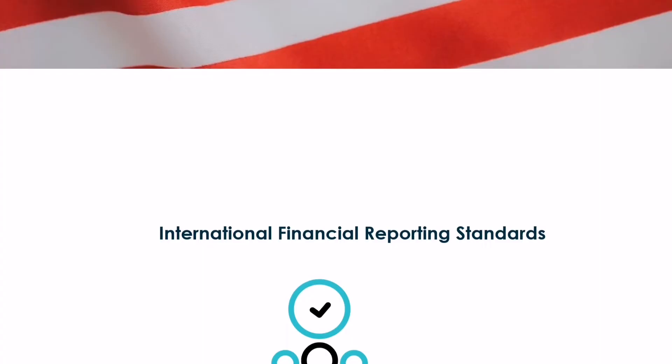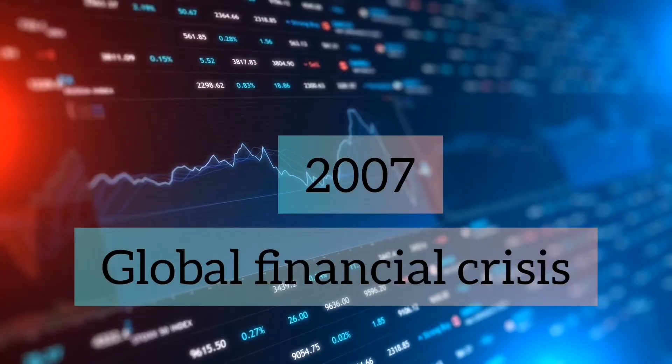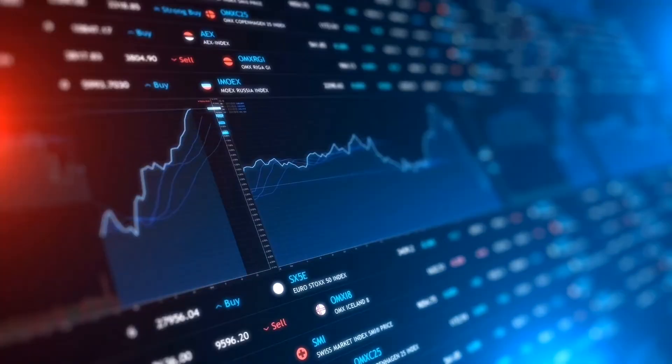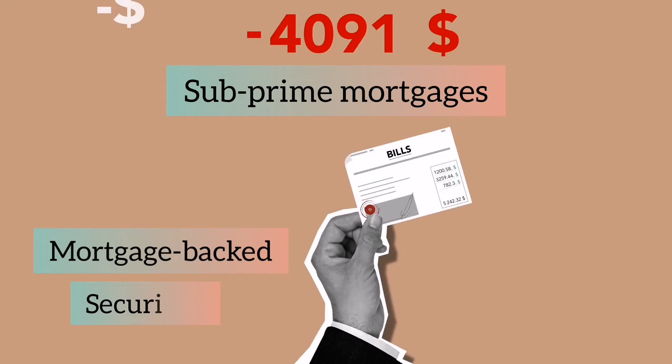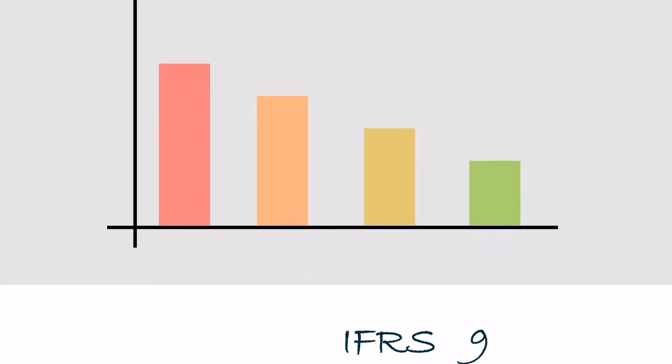In 2005, the International Accounting Standards Board replaced the International Accounting Standards Committee and introduced IFRS, a globally accepted set of accounting standards used in many countries. In 2007, the global financial crisis had huge implications worldwide. Financial institutions packaged subprime mortgages into complex financial products known as mortgage-backed securities and collateralized debt obligations, which were sold to investors. As the housing market began to decline, borrowers defaulted on their mortgage payments, causing investors to lose their investments.